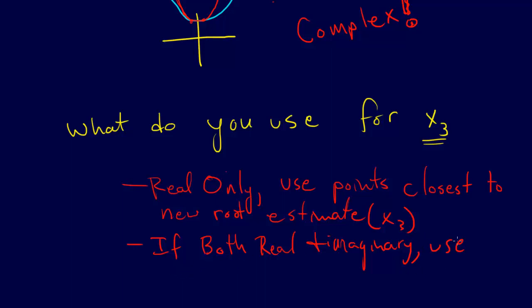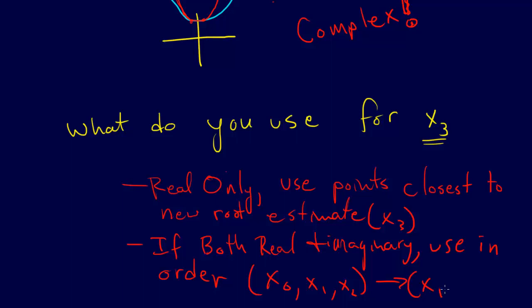If both real and imaginary roots are being found, you simply do them in order. So if you have x1, x2, x3, you just go in order if you're using both real and imaginary roots. And that's the same as what the secant method does — the secant method goes in order, which allows it to bounce back and forth.